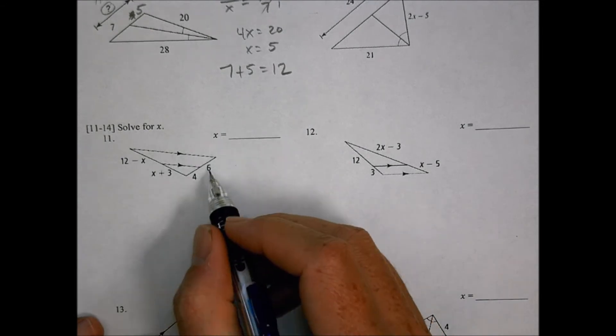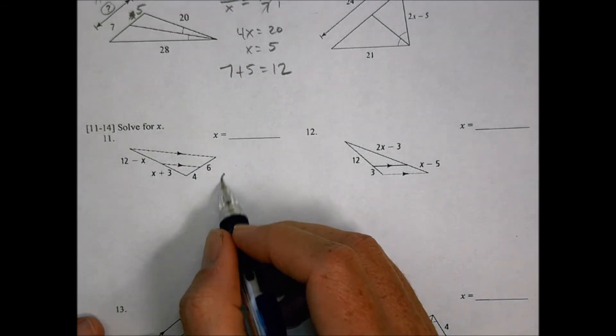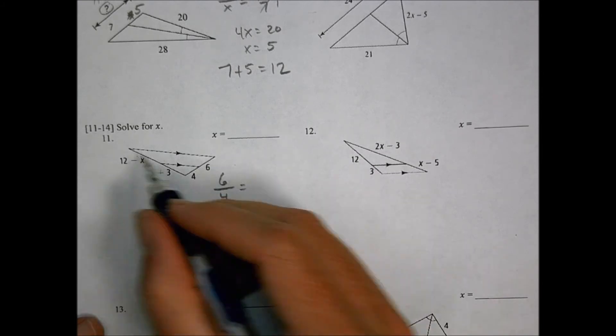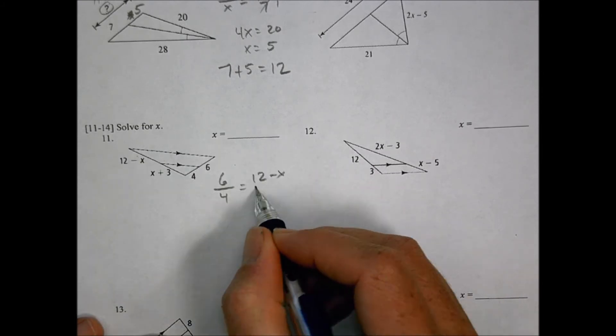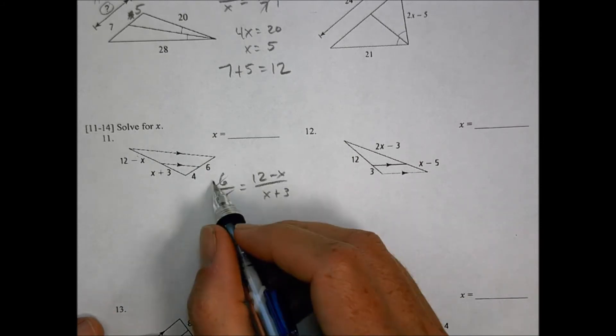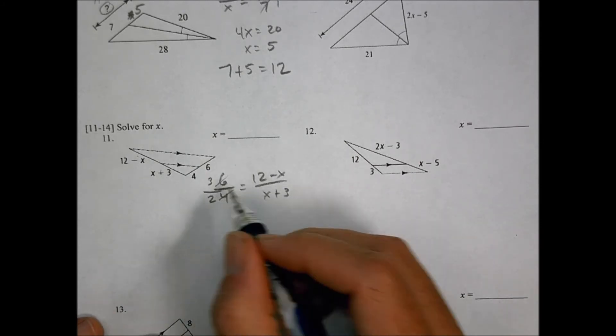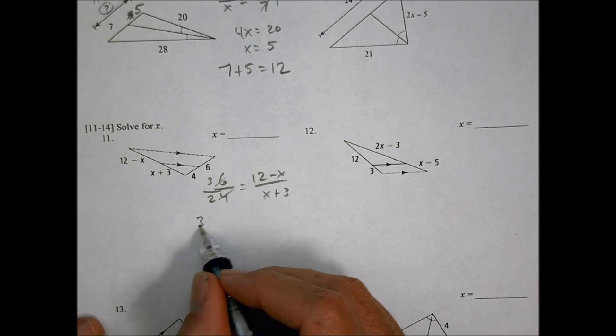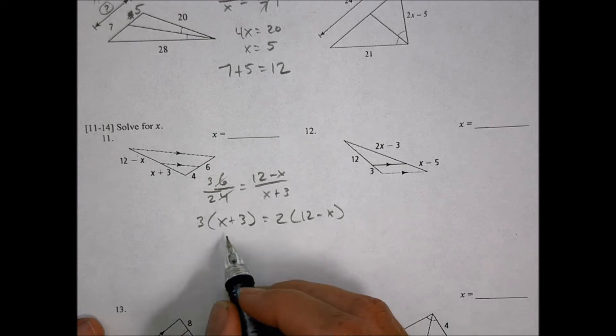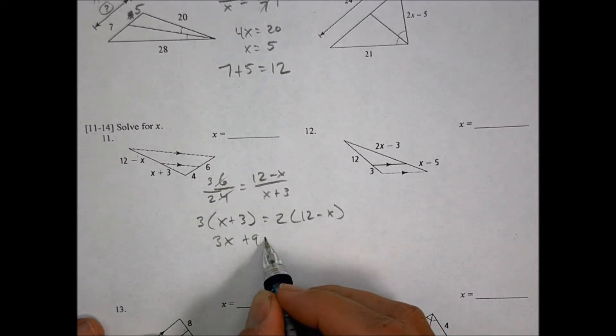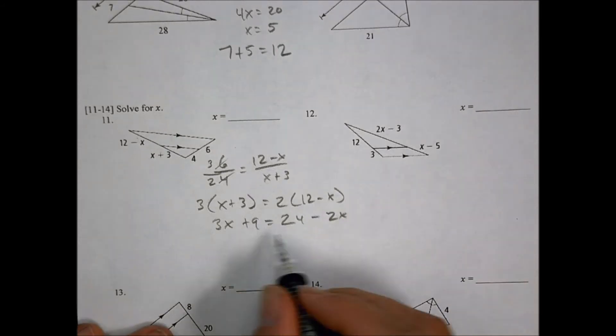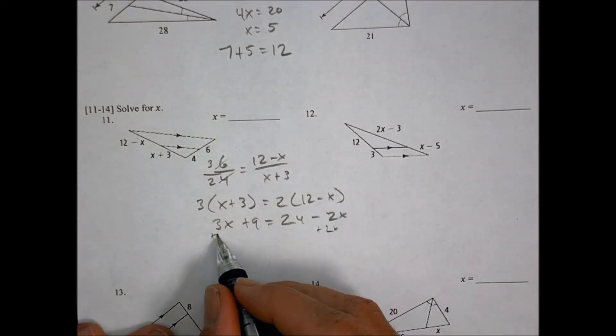Number 11, we could say that 6 here goes to this 4, 6 to 4, and then we can say 12 minus x goes to x plus 3. We can reduce this to 3 over 2, and then we can cross multiply. We get 3 times x plus 3 equals 2 times 12 minus x, so we end up with 3x plus 9 equals 24 minus 2x.